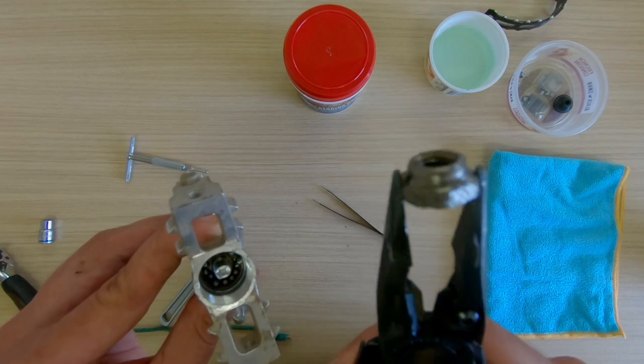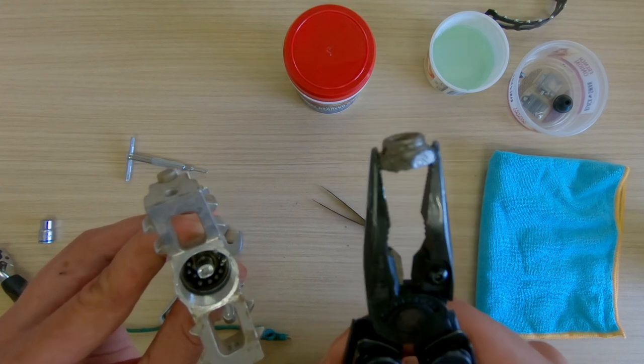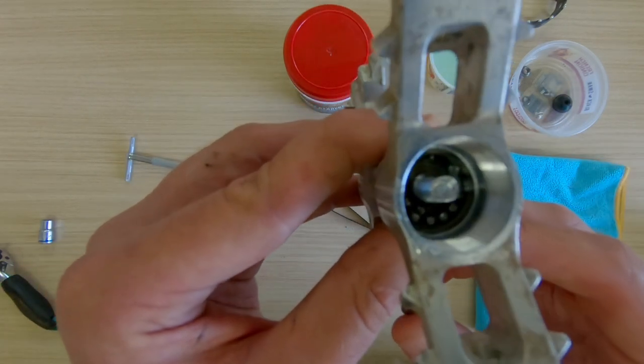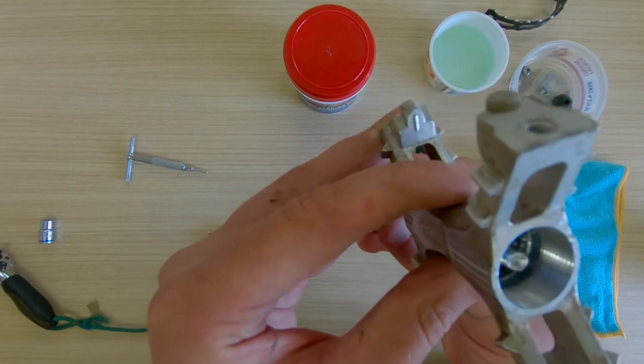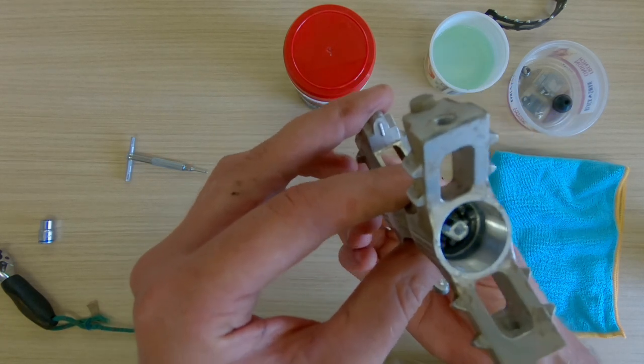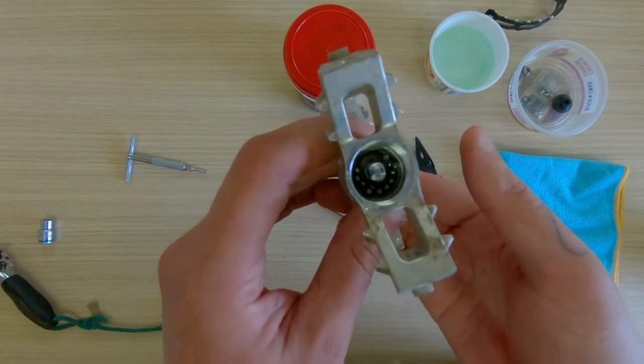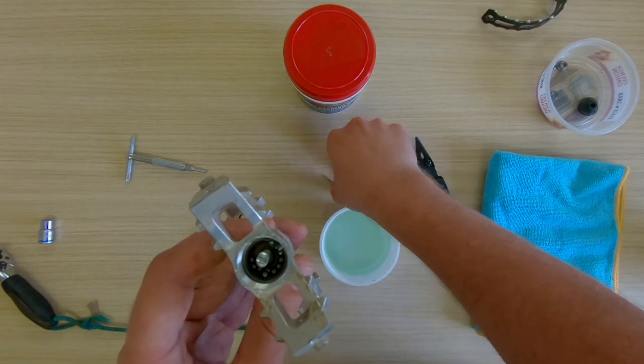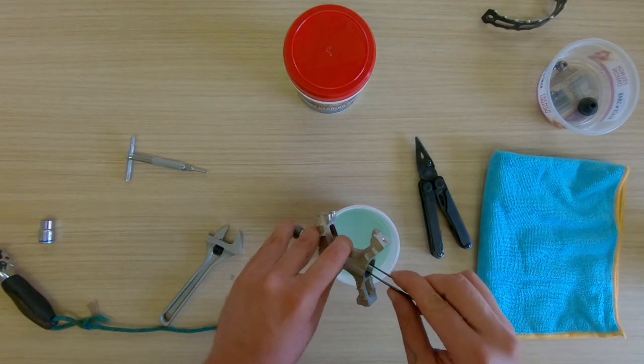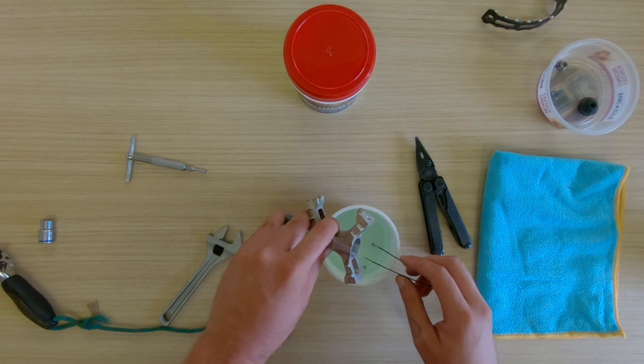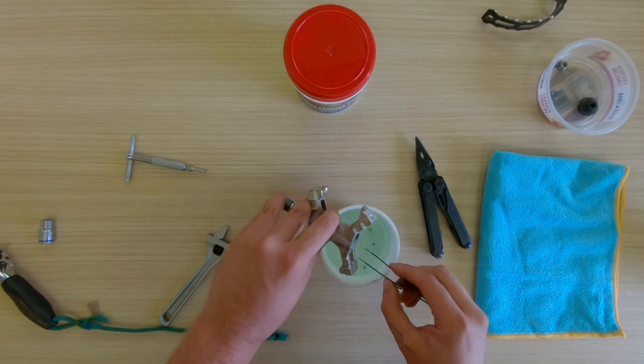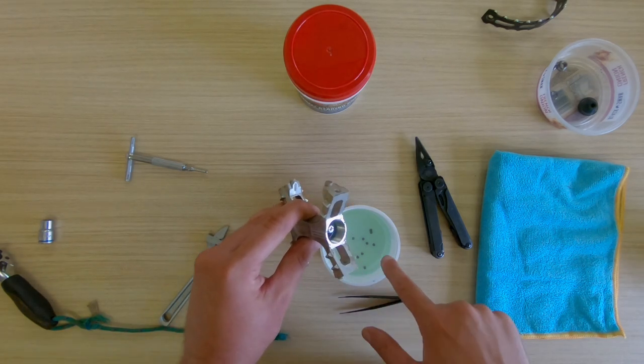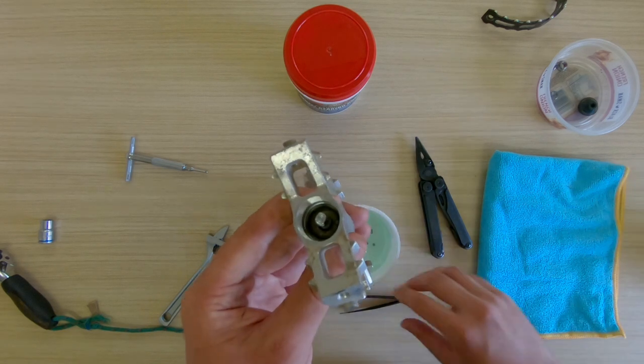As you can see, that's got that curved edge, that race for the bearings to sit on. And there are the bearings in there. You can see a couple have been displaced by me moving this about. You want to be very careful not to lose these. These should be 12, so I'm going to pull these out and dunk them in this degreaser.